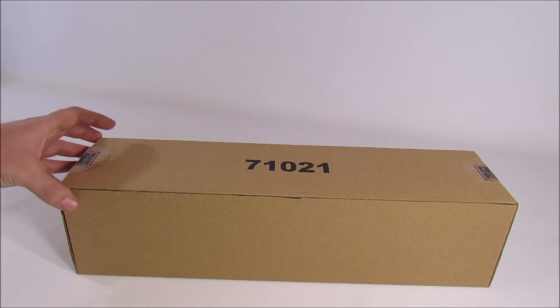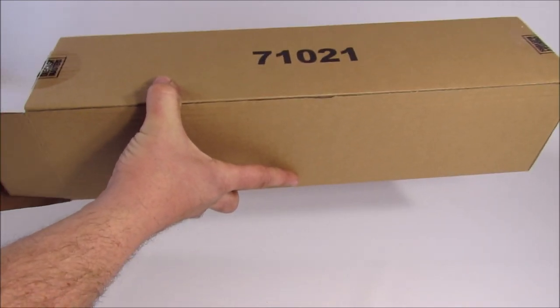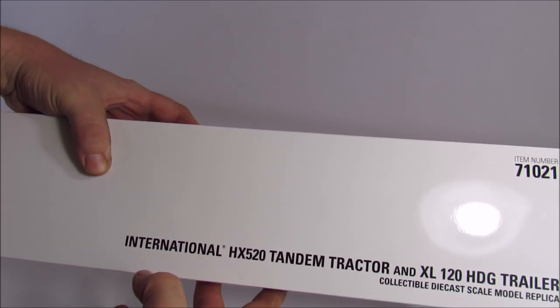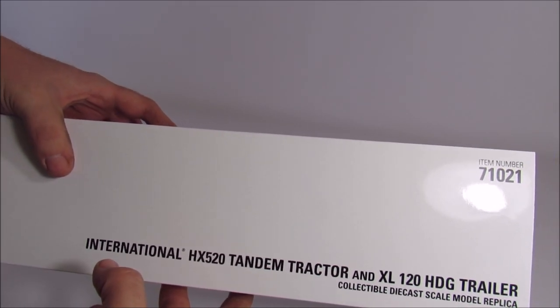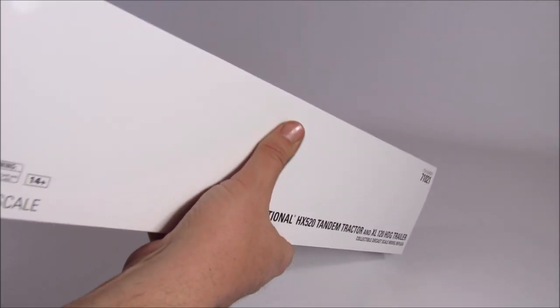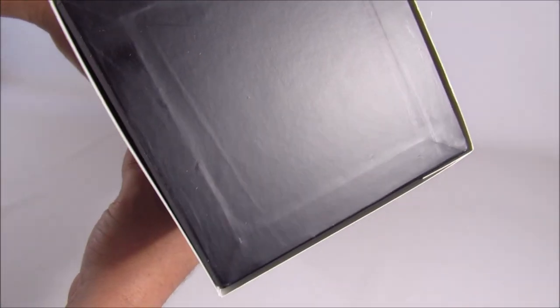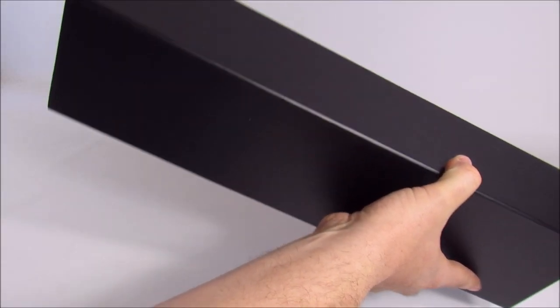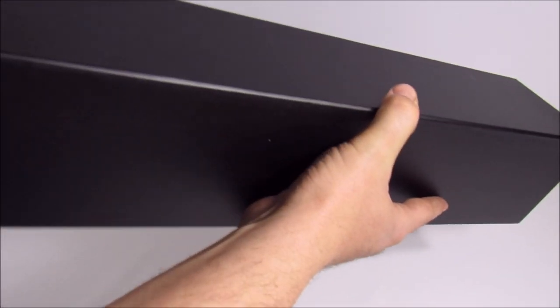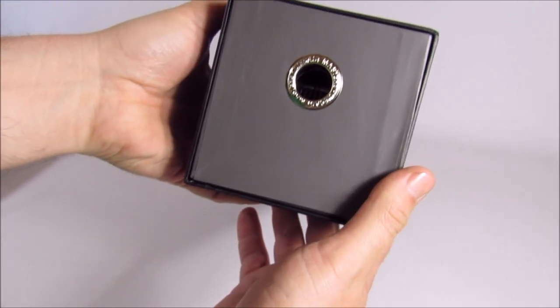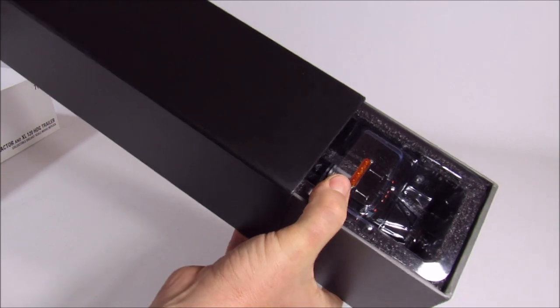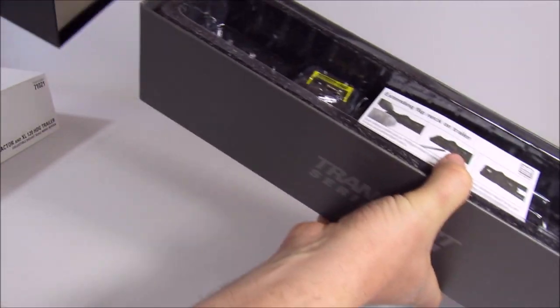All right, well we got that static nightmare straight out. I had to get out the old vacuum cleaner to save the day. Let's see what we got here. It's that International HX 520 tandem tractor and XL 120 HDG trailer. So you got a flap on this side and nothing on that side, that's kind of interesting. Kind of nice you don't have to rip the flap off trying to get the thing open.